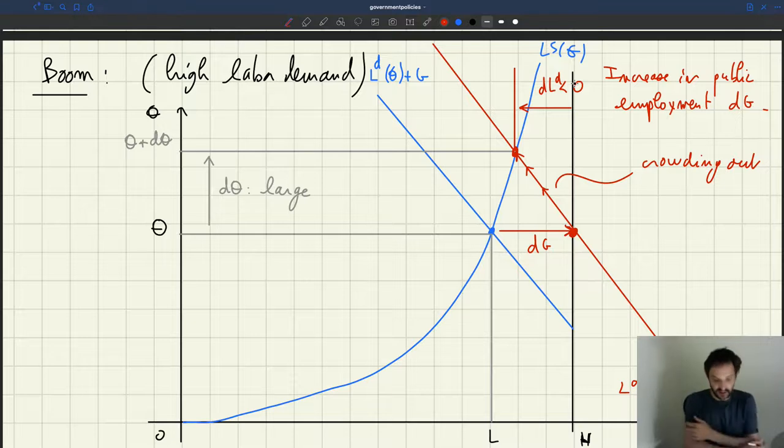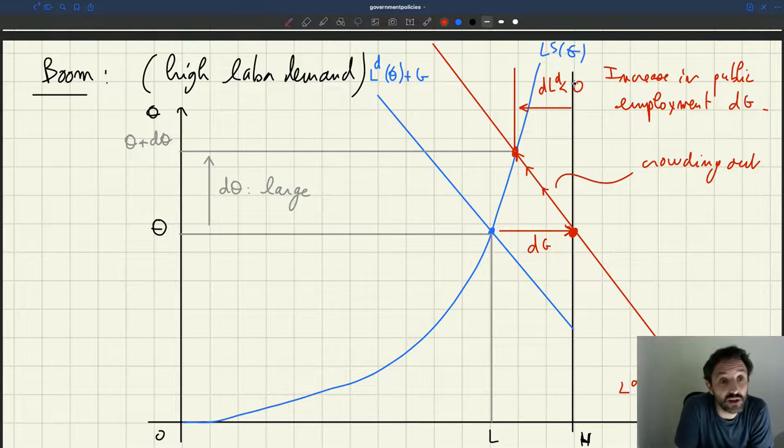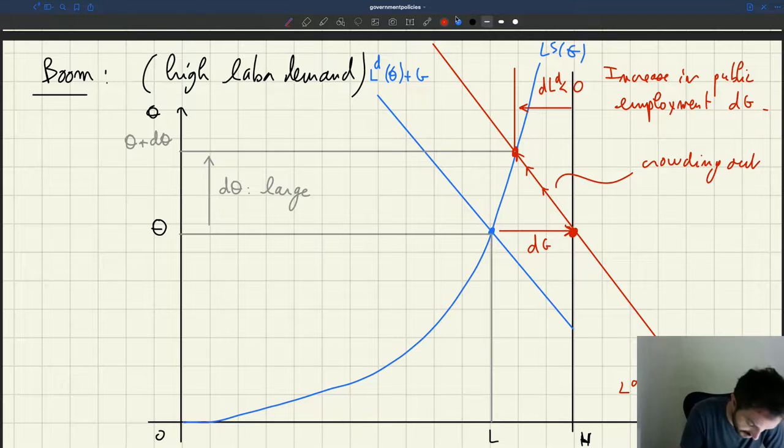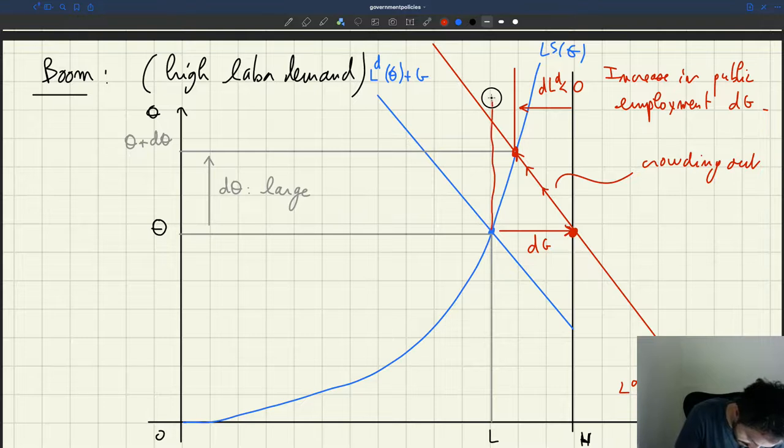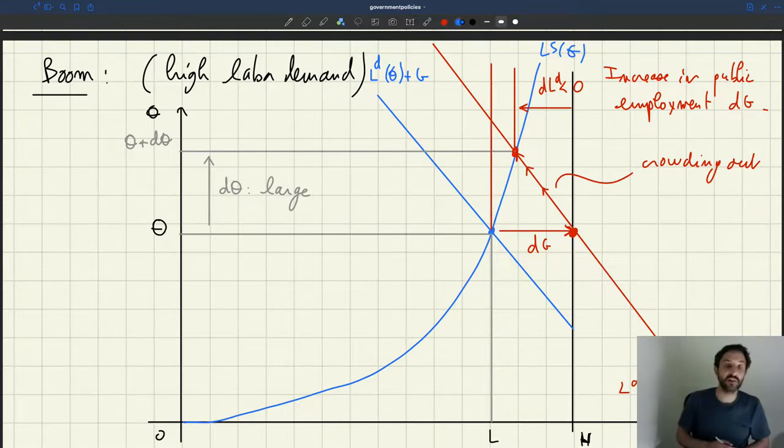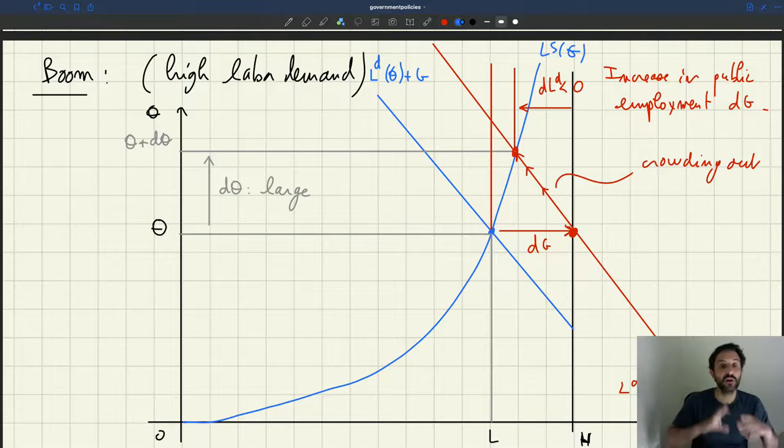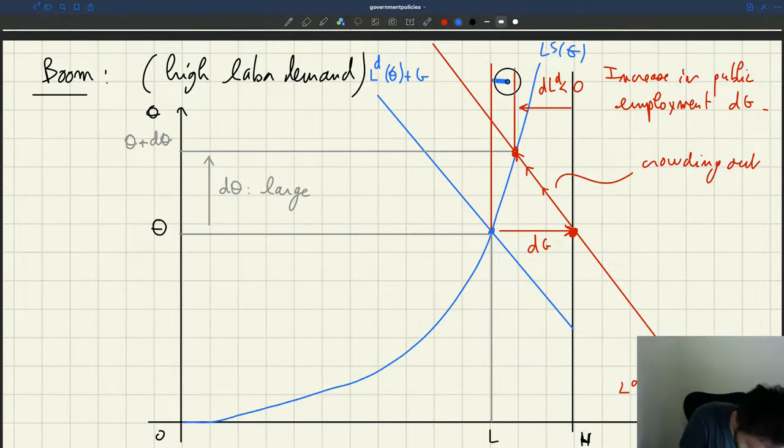And so in fact, here we can see that the reduction in private labor demand, it eats up almost all of the increase in aggregate labor demand caused by the increase in public hiring. So now if I want to look at the total increase in employment, so increase in public employment, net of the decrease in private employment, it's only the small quantity here.